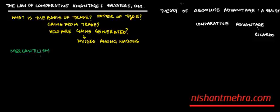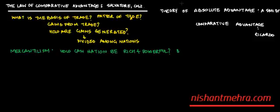So what is the mercantilist view on trade? Mercantilists asked: how can a nation be rich and powerful? They said that if a nation exports more than it imports, then the nation can be rich and powerful — by exporting more and importing less.